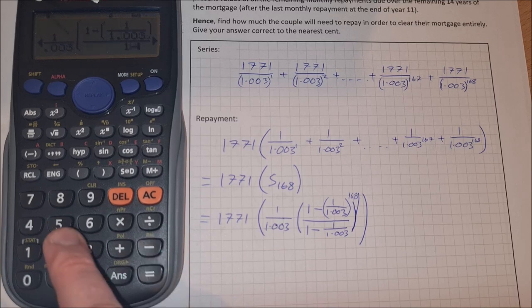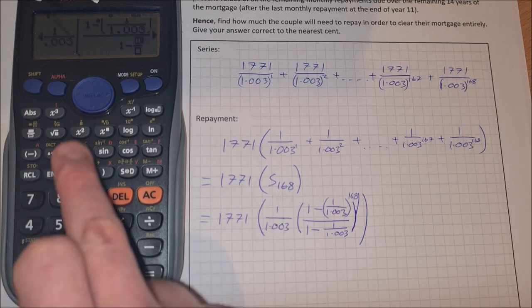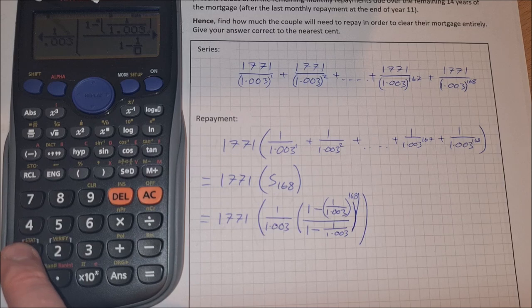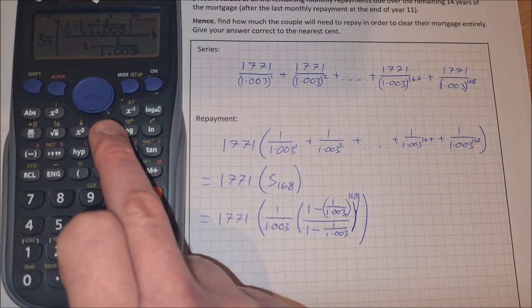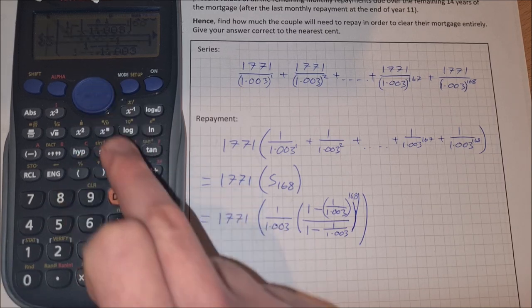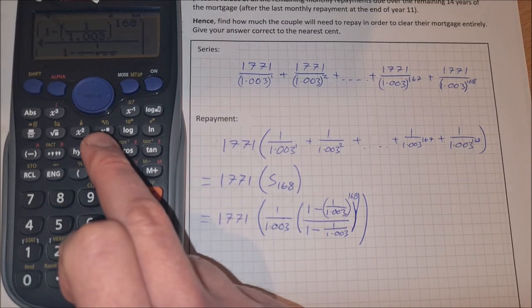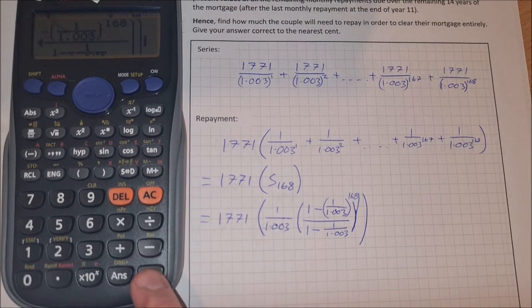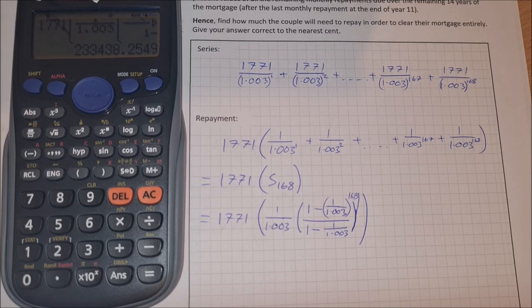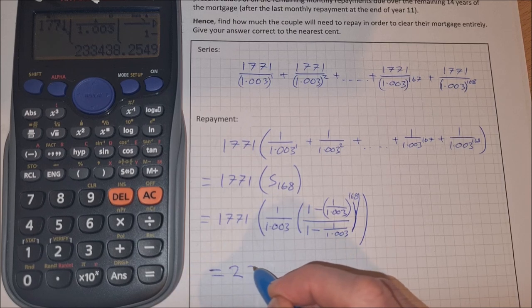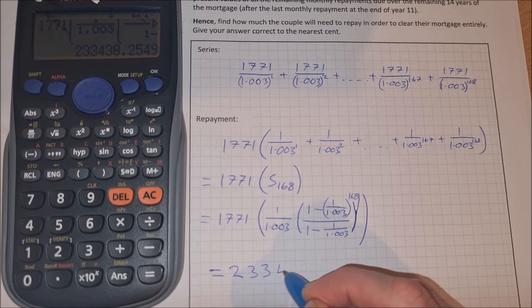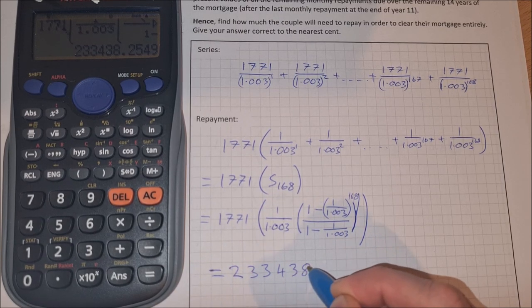And then I'm down to the bottom line of my fraction, which is 1 minus, and we have a fraction 1 over 1.003. And then close bracket, close bracket, and that is equal to the amount repayable in total is 233,438 euro.